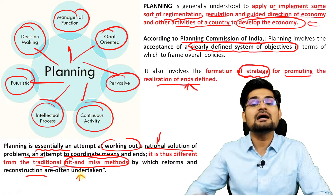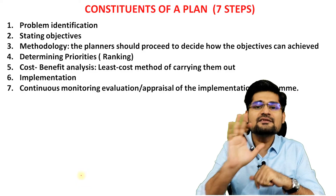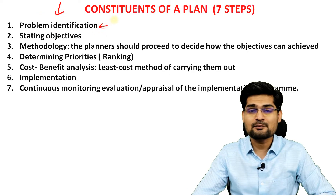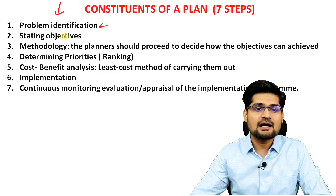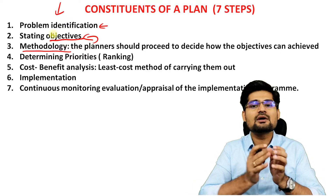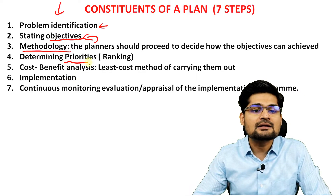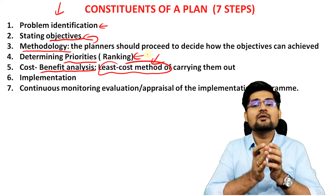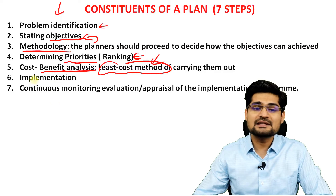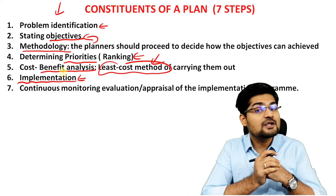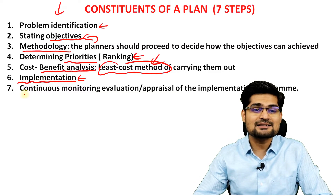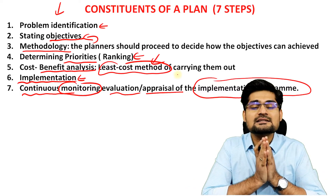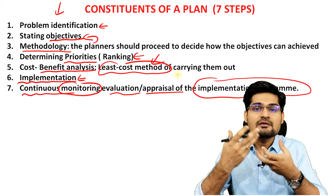There are seven constituents or steps of a plan. Step one is problem identification — defining what problem we are looking into. Step two is setting objectives. Step three is methodology to achieve those objectives. Step four is determining priorities through ranking or hierarchy. Step five is cost-benefit analysis — the least-cost method, similar to Weber's industrial location theory. Step six is implementation of the plan. Step seven is continuous monitoring, evaluation, and appraisal, which provides feedback for future plans.